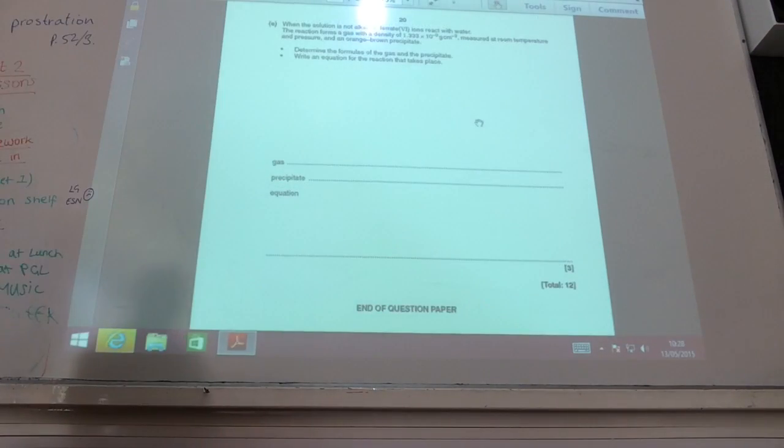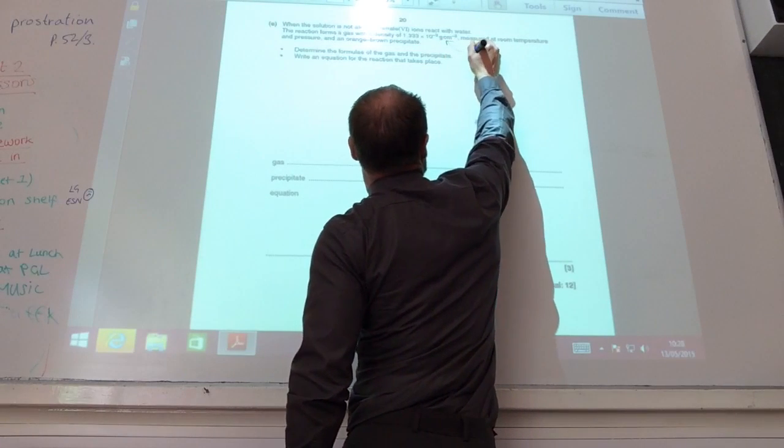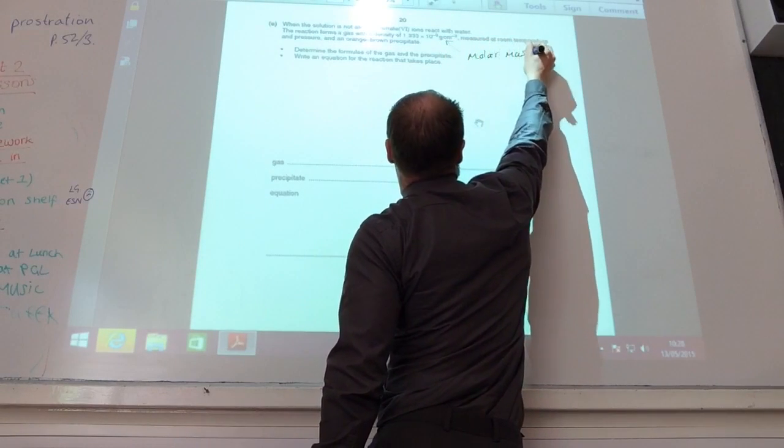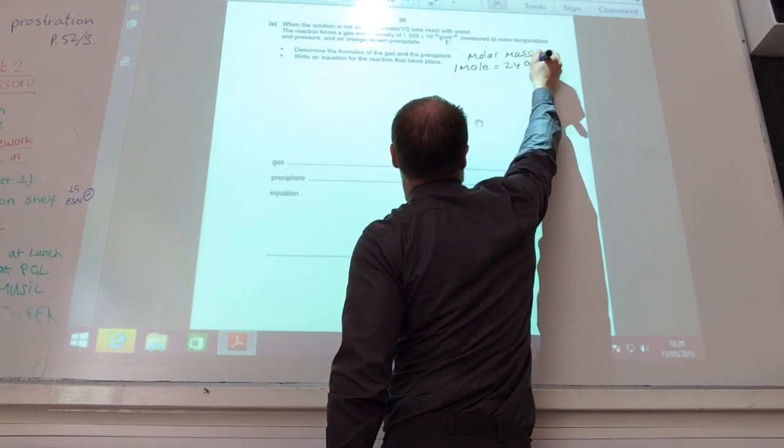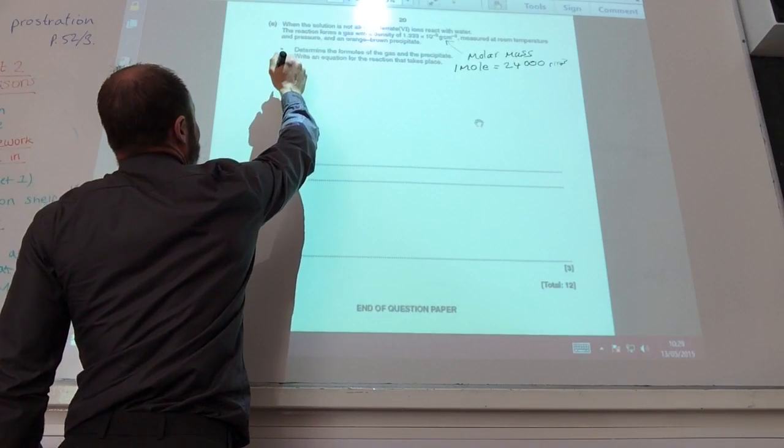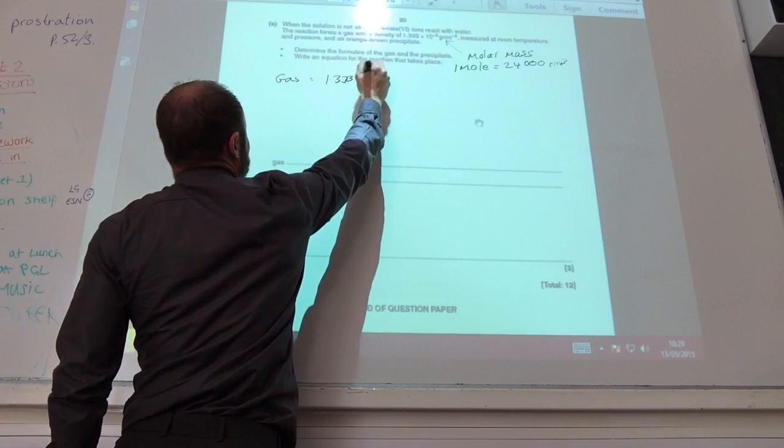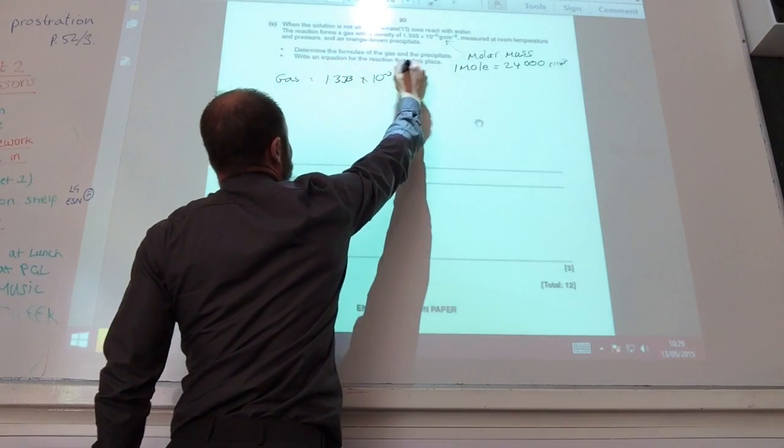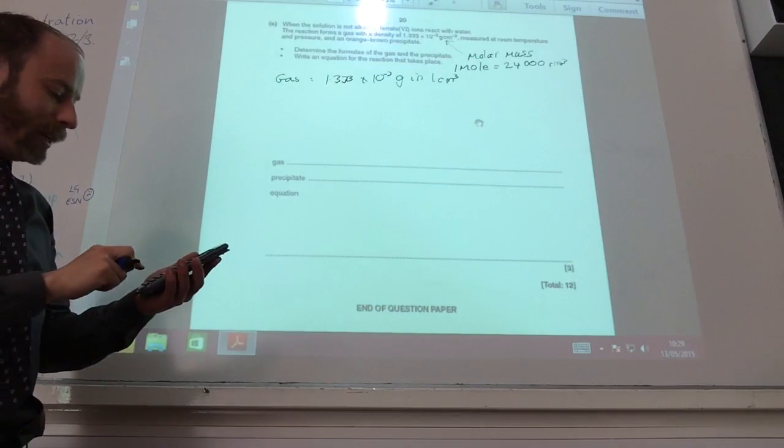Right, the killer blow. So we actually call the gas with a density of 1.333 times 10 to the minus three grams per centimeter cubed. We can use that to find the molar mass of the gas. Because we know that one mole of any gas has a volume of 24,000 centimeters cubed.